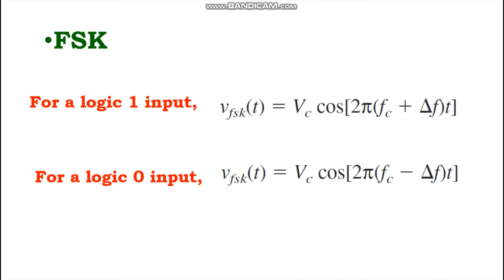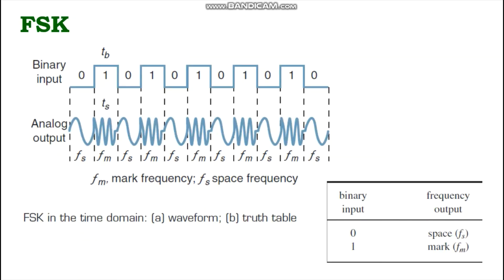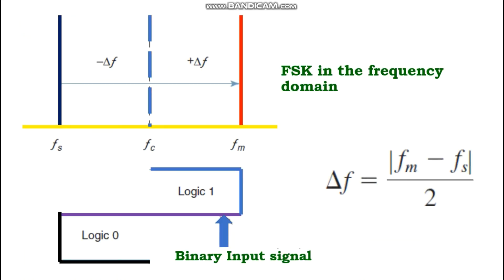With binary FSK, the carrier center frequency fc is shifted up and down in the frequency domain by the binary input signal. As the binary input changes from logic 0 to logic 1 and vice versa, the output frequency shifts between a mark (logic 1) frequency fm and a space (logic 0) frequency fs. The mark and space frequencies are separated from the carrier frequency by the peak frequency deviation Δf, defined as: Δf = (fm − fs) / 2.